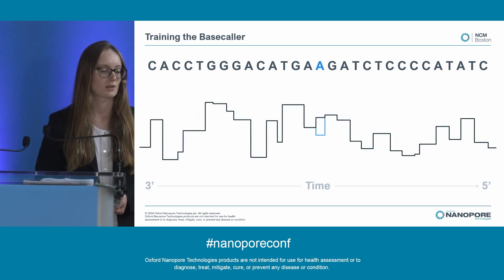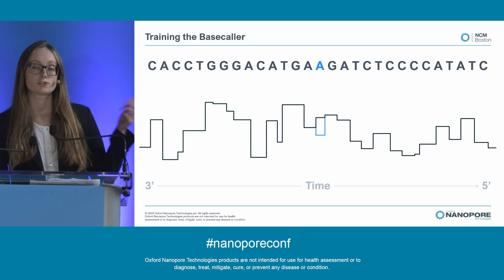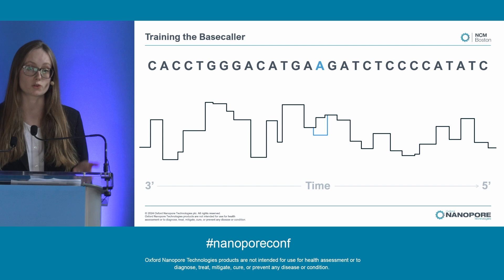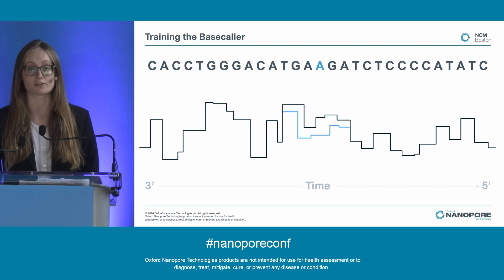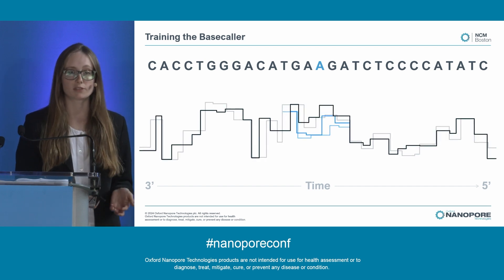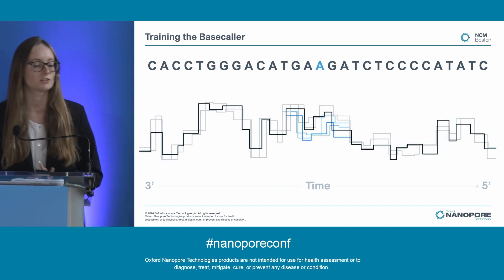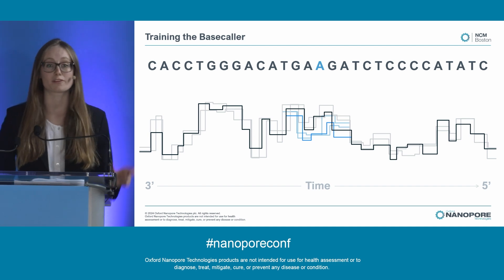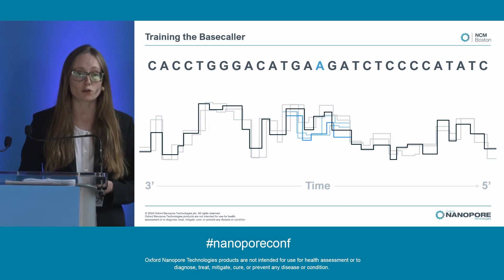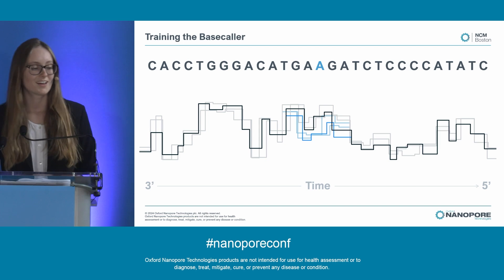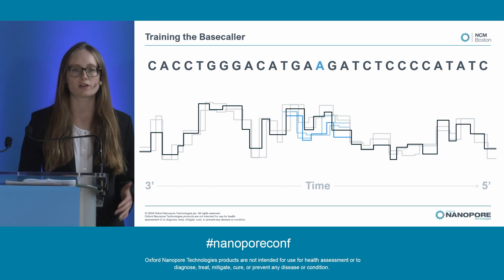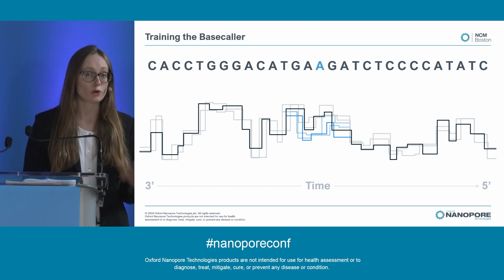So if you have a modification, as shown here in blue, it might change some aspects of the signal — for example, it might change the level of your signal, it could change the dwell time, and it can impact the context. This can also come in many different variations, similar to what we see with any other part of the sequence. This is information we can use to identify where modifications are on a single base level for individual reads. The changes in the signal can trip up our canonical base caller if it's not expecting them, but if we show it enough examples, it can learn to call the canonical base correctly.